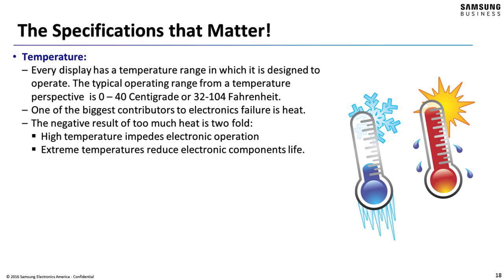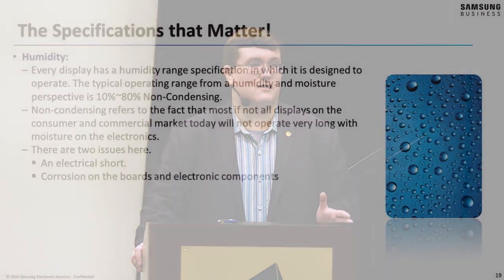Temperature is kind of the other obvious one — brightness, temperature, and moisture are the three most obvious factors everybody thinks about when specifying a display. Every single display has a range of temperatures it can withstand. The Samsung panels we provide go from about 0 to 40 Celsius, which is 32 to 104 Fahrenheit. That's not bad, but 104 Fahrenheit is not that hot, especially if you're in Phoenix in the middle of June — there are going to be instances where you do need to prepare active cooling of some sort.